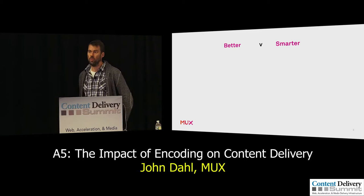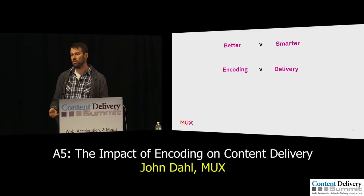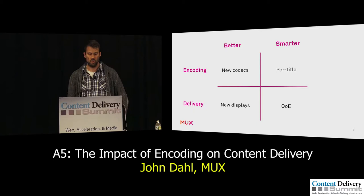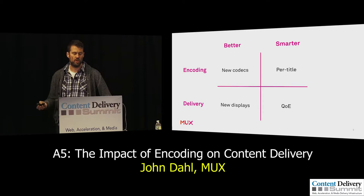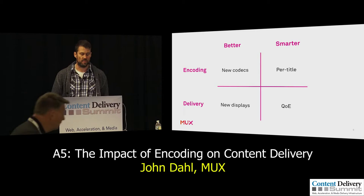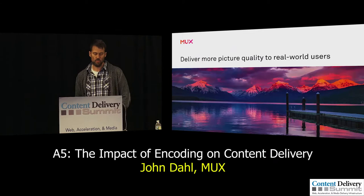Similarly, you can think about improving video quality from an encoding standpoint and from a delivery standpoint. Encoding is the bits themselves — once you have them on your hard drive, how do they look? Delivery is sort of the end-to-end: how does video look in the wild on a real-world user with real-world bandwidth and a real-world device? If you plot these on a two-by-two matrix, you get four things: improving quality with new codecs, encoding smarter with per-title encoding, delivering to better displays, and doing delivery smarter with QoE optimization. The guiding goal for all of these is to deliver more picture quality to real-world users.